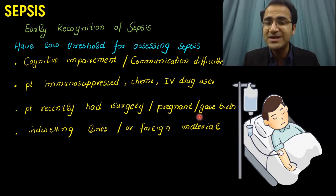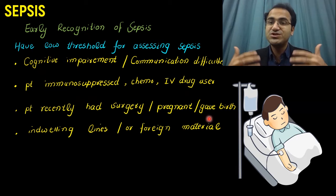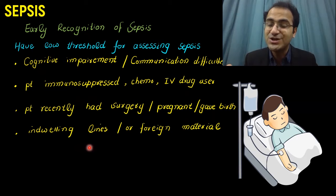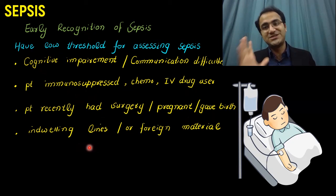Patients who have had surgery, or who are pregnant or recently gave birth, have a low threshold because they have been exposed to bacteria and are at high risk of sepsis. Indwelling IV lines left in place for a long period can get infected, and any foreign material like tampons inside the body can also be a source of infection leading to sepsis.